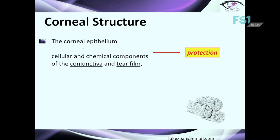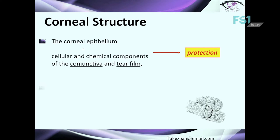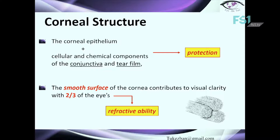The corneal epithelium and cellular and chemical components of the conjunctiva and tear film provide the protection of the cornea. Another thing is that the cornea has a smooth surface, and this smooth surface contributes to visual acuity. And as already mentioned, with two-thirds of the eye's refractive contribution, it provides the refractive ability.